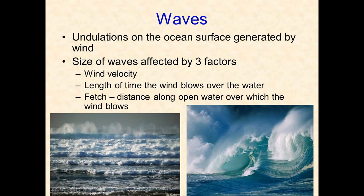A wave is an undulation on the ocean surface generated by winds — similar to how surface oceanic currents are generated by friction of wind blowing across the ocean surface. The size of any wave is affected by three factors: wind velocity, the length of time the wind blows, and fetch — the distance over which the wind blows. Maximizing all three produces large waves; minimizing them produces smaller waves.